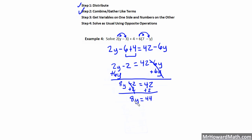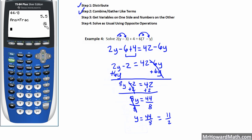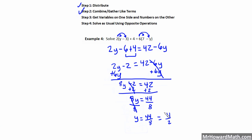Last step: I have 8 times y, and the opposite of multiply is to divide. I want to get 1y, so I divide both sides by 8. That gives me 1y, which is y equals 44 over 8. It looks like this will reduce. I know it reduces to 11 over 2. To confirm with the calculator, I enter 44 divided by 8, get a decimal, then hit Math, Enter, Enter to convert to a fraction — and it reduces to 11 over 2.